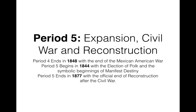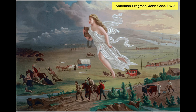Period five ends in 1877 with the official end of Reconstruction after the Civil War. So period five includes the Civil War and Reconstruction. I think the thing to think about for expansionism in period five is really this image called American Progress by John Gast.